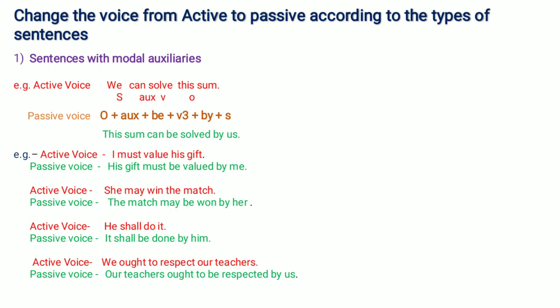Next example: 'We ought to respect our teachers.' 'We' is the subject, 'ought to' is the modal auxiliary verb, 'respect' is the main verb, and 'our teachers' is the object. We take the object to the beginning, use the same modal auxiliary verb 'ought to', add 'be', then V3 of respect is 'respected', followed by 'by us'. The passive voice is: 'Our teachers ought to be respected by us.'